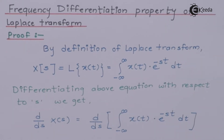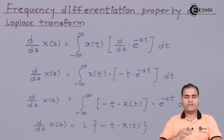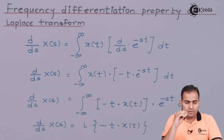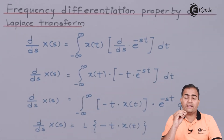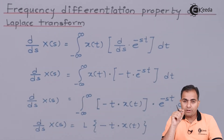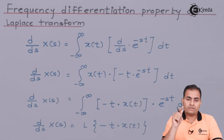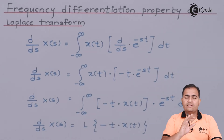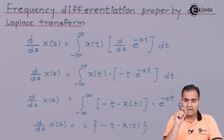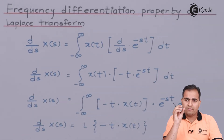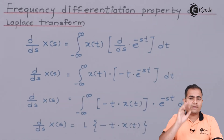Let's see what will be the differentiation of e to the power minus ST. We know that the differentiation of an exponential function e to the power AT with respect to T is e to the power AT, where T is the variable but A is the constant — that constant term is multiplied with e to the power AT. So if that power has a plus or minus sign, we multiply the same value with its sign.